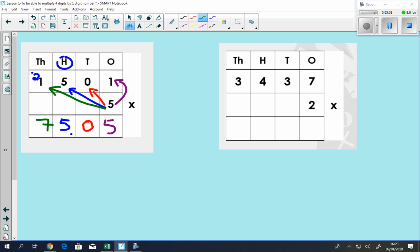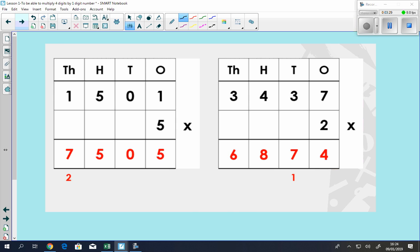Again, on this side, 2 multiplied by 7 is 14. Put our 1 there. 2 multiplied by 3, that's 6. Add 1, 7. If we did 2 multiplied by 4, 8. And then if we did 2 multiplied by 3, 6.